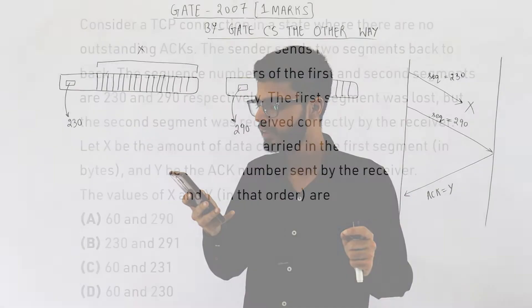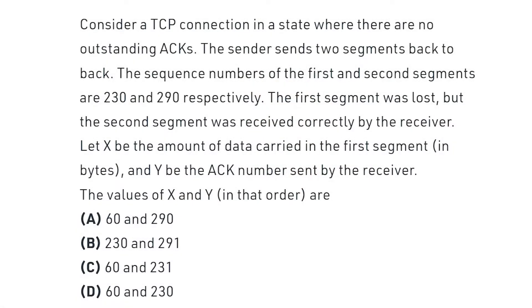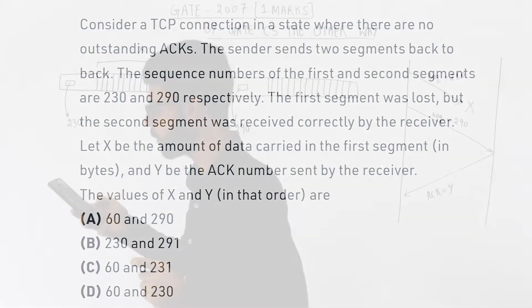Consider a TCP connection in a state where there are no outstanding acknowledgements. The sender sends two segments back to back. The sequence numbers of the first and second segments are 230 and 290 respectively. The first segment was lost, but the second segment was received correctly by the receiver. Let x be the amount of data carried in the first segment in bytes, and y be the acknowledgement number sent by the receiver. The values of x and y in that order are: